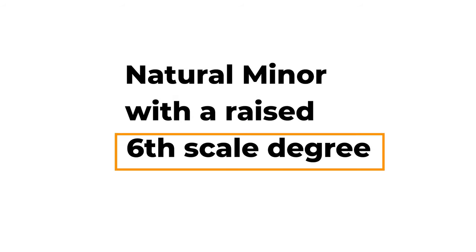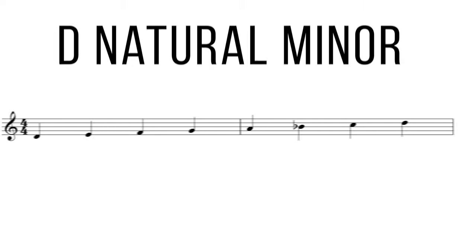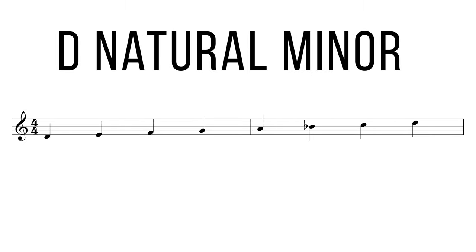The Dorian scale is a minor scale. It's very similar to the natural minor scale but with one difference — the sixth note is raised up a half step. Let's start from the D natural minor scale. The D natural minor scale has one flat, B flat, coming from the F major scale, so D natural minor is the relative minor of F.